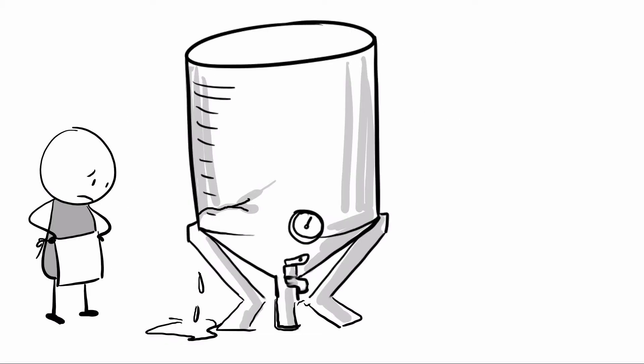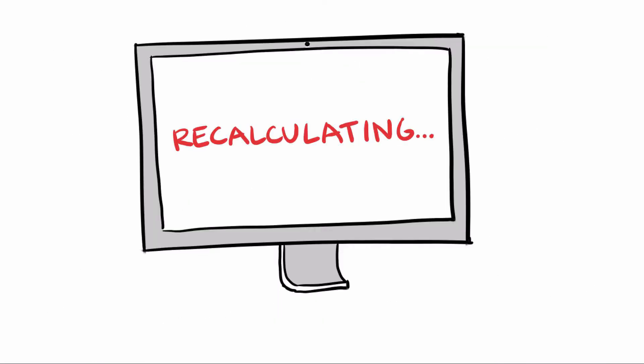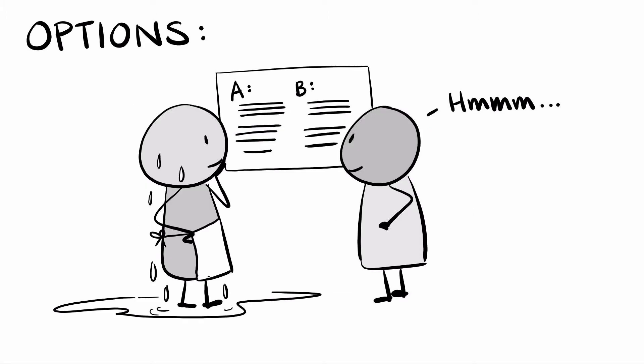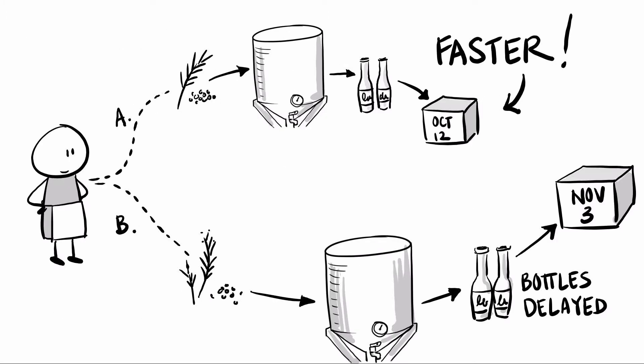And when something unexpected happens, Planet Together recalculates in seconds and offers you options. Just like in your GPS, you can choose the route that works best for you to avoid bottlenecks.